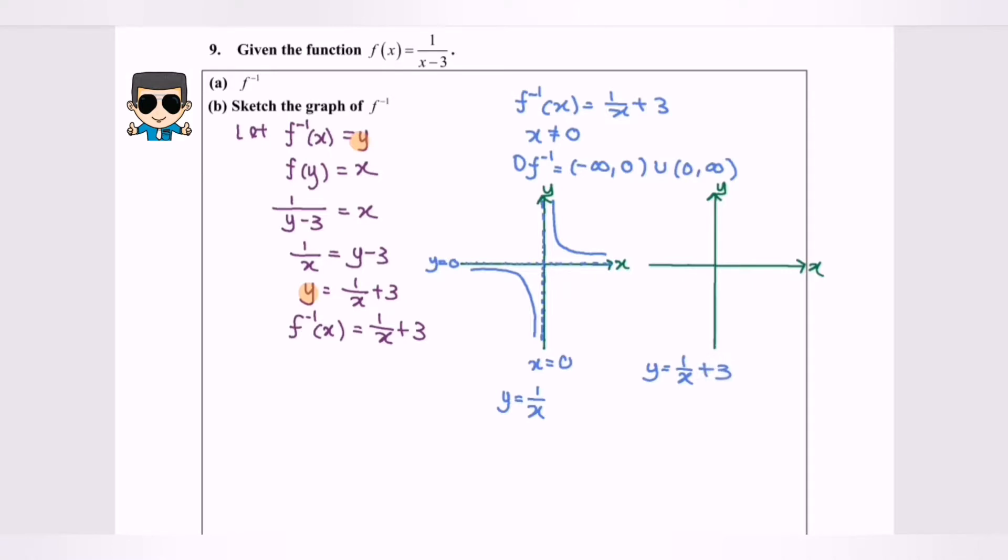The plus 3 increases the value for y by 3. The horizontal asymptote becomes y equals 3, but the asymptote for vertical still the same, which is x equals 0. Now the graph shifts up, so the graph will be something like this.